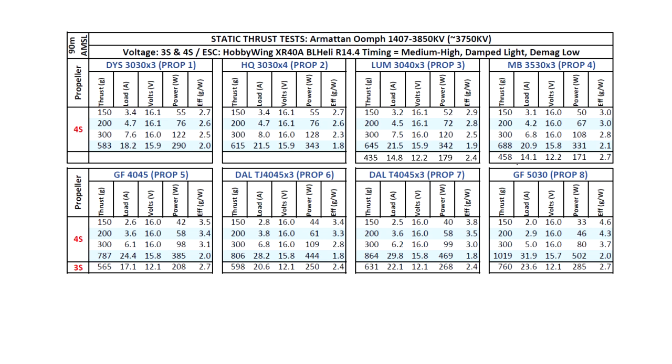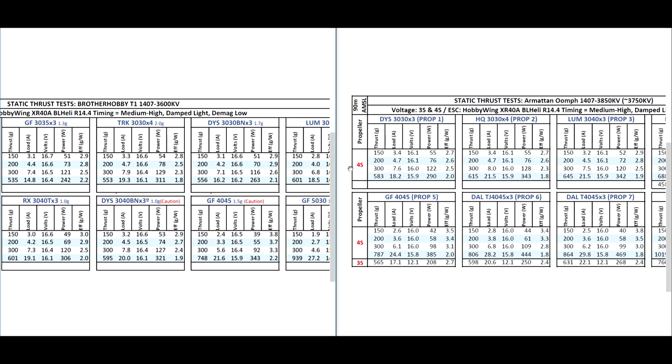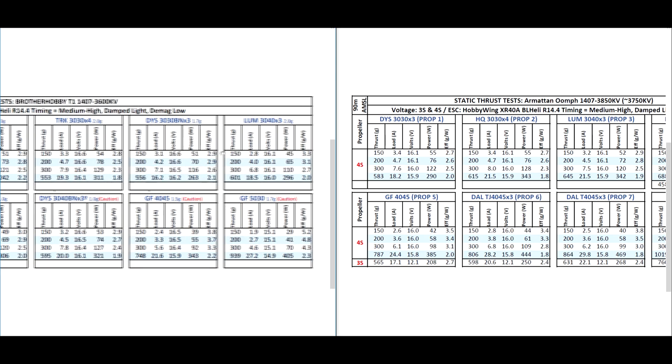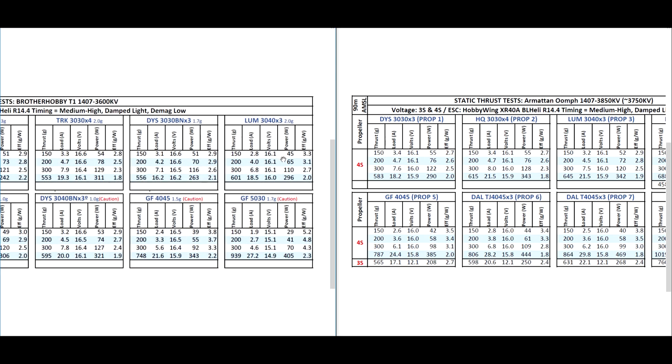So now let's compare against its brother, the Brother Hobby 1407 3600KV. Let's look at the side-by-side comparison. The first prop would be the DYS 3030x3. We can see some good increase in thrust, 583 versus 556, pretty respectable. Then we go on to the Lumineer 3040x3, which is another prop that performs pretty well. It's one of the better performing 3-blade props for 3-inch. 50 grams more, pretty good increase in performance. Then the other prop worth noting is the GenFan 4045, again, pretty good increase.